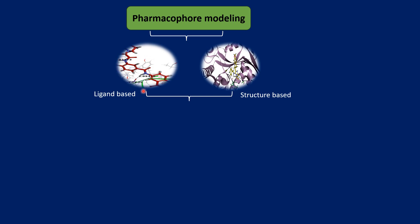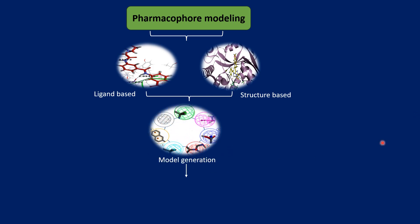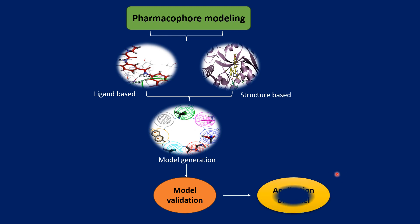In ligand-based pharmacophore modeling, all ligands are taken and aligned. The ligands can be active, moderately active, or inactive compounds. They are aligned over each other, and a training set and a test set are generated. Based on the analysis of the training set, different pharmacophoric models are generated. These models are then validated and ranked, and based on their ranking we can select the final model.